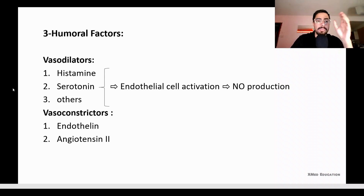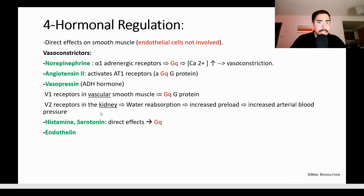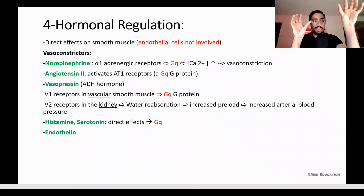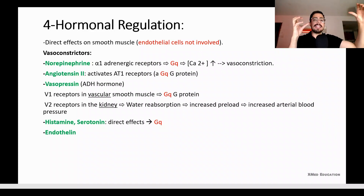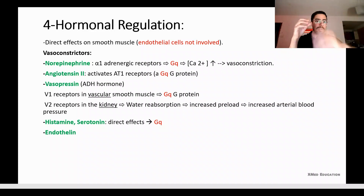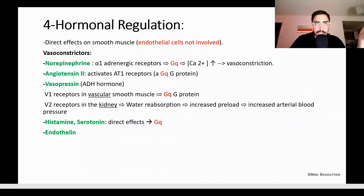Endothelin and angiotensin 2 are humoral vasoconstrictors — angiotensin 2 will be discussed more in the renal topics. Humoral means one cell in a tissue affects another cell in the same tissue. Hormonal regulation is different: it means a product from one tissue — a hormone — travels through the blood to affect another organ. For example, epinephrine is released from the adrenal gland and travels through the blood to affect other organs.